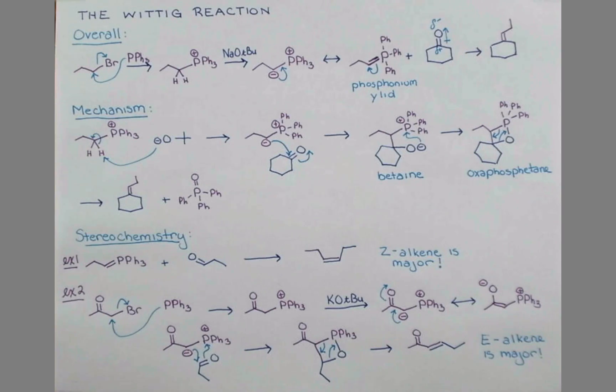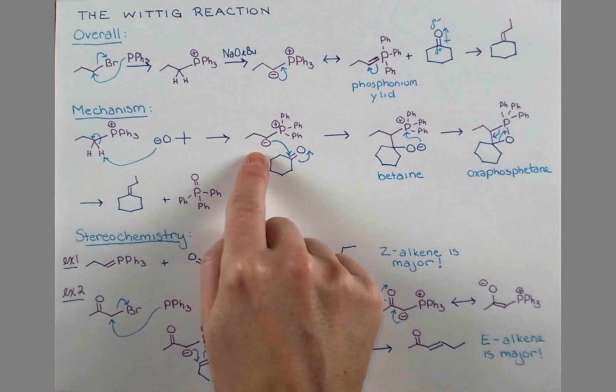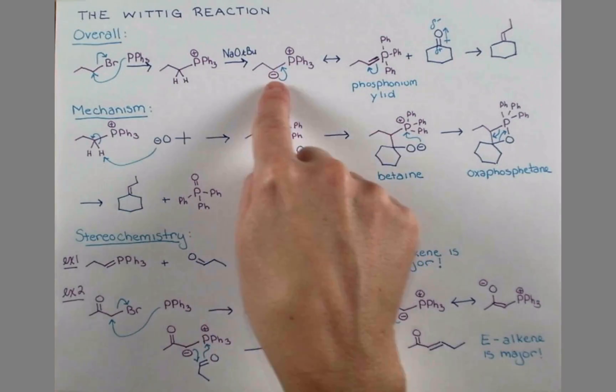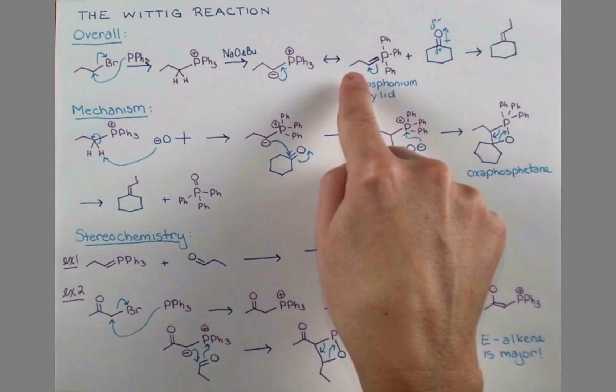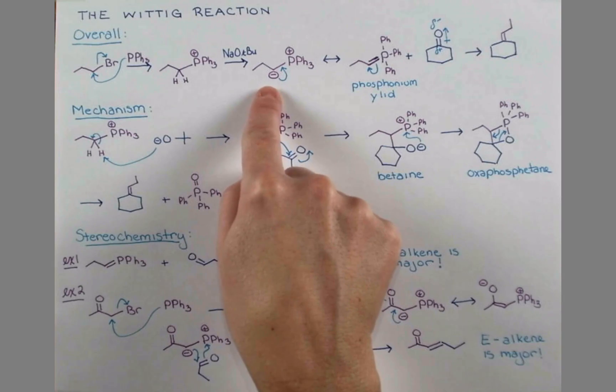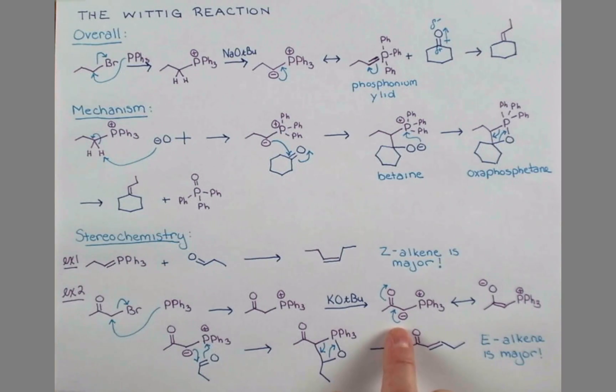So when predicting the major product of the Wittig reaction, we need to look at the phosphonium ylid that's formed. This one has no additional resonance except for the resonance that represents this as the neutral form or the charge-separated form. This here has actually three resonance forms. We could push this way to show the neutral form, but we can also push in the other direction toward this anion-stabilizing group.